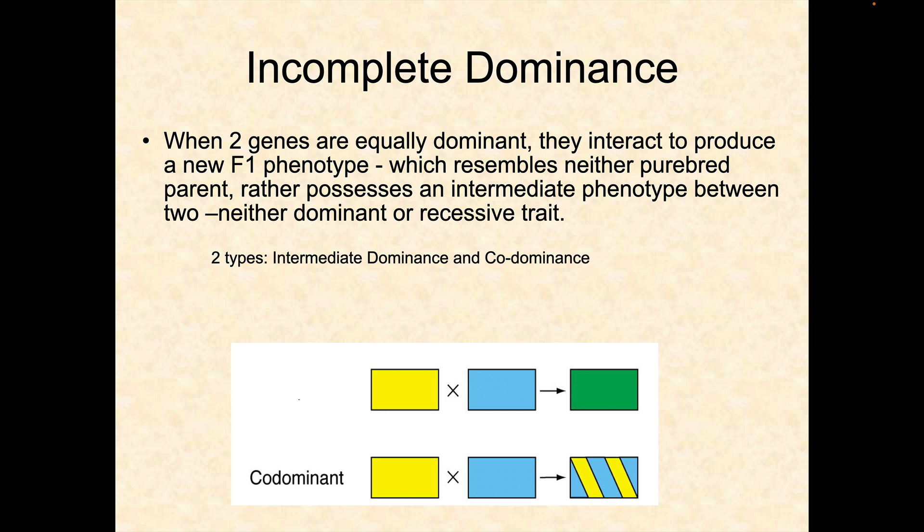Incomplete dominance is when two genes are equally dominant and they interact to produce a new phenotype which resembles neither purebred parent, but rather possesses an intermediate phenotype between the two. So there's really neither a dominant nor a recessive trait.